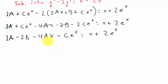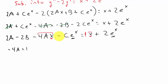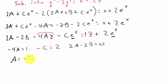Matching coefficients: the x terms give negative 4A equals 1, so A equals negative 1/4. The e to the x terms give negative C equals 2, so C equals negative 2. The constant term on the right side is 0, so 2A minus 2B equals 0, which gives B equals A equals negative 1/4.